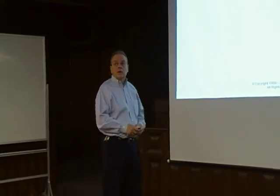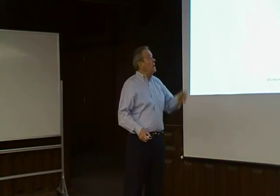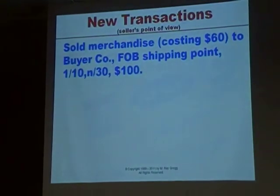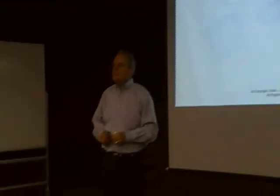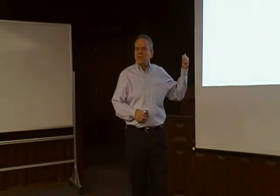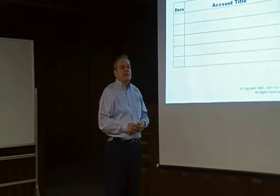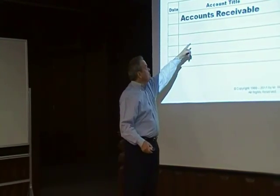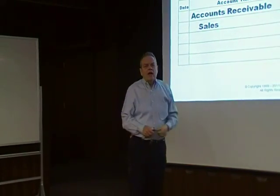Now let's do two minutes on seller's point of view. If we sold goods off the shelf to the buyer, FOB shipping point, 1/10 net 30 for $100 — the buyer pays the freight, so we as seller don't deal with freight. We're selling on account, so we debit accounts receivable and credit sales for $100, the amount earned in revenue.